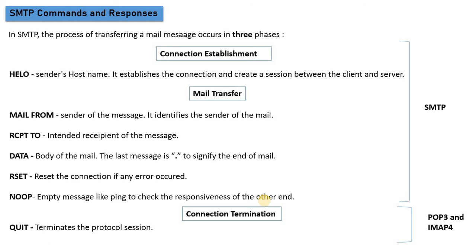Finally, if the server has received the mail, then after receiving it, the recipient can open and read it. A different protocol is used for this — a pull protocol such as POP3 or IMAP. We will see the details in the next video.